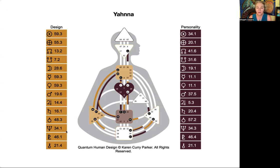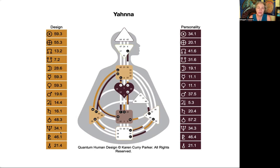One of the things I want to point out is where there are gates with multiple activations. Down here in the outer planets, you can see Chiron is in the 24 twice, Pluto's in the 46 twice, Neptune is in the 34 twice. Sometimes you'll also see Uranus in the same gate — this is a very common place to see double activations. And this person — can somebody tell me what kind of definition they have: single split, triple split, or quadruple split?